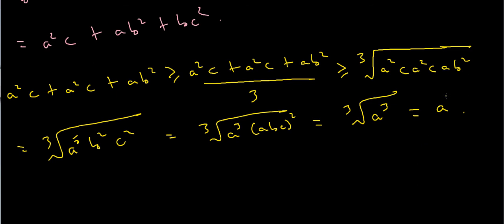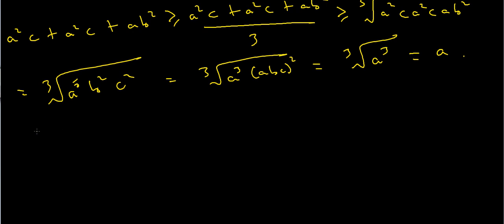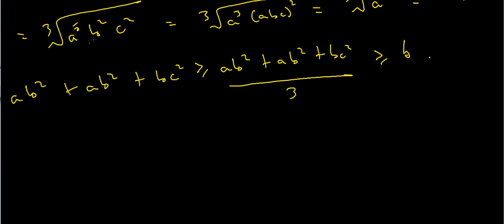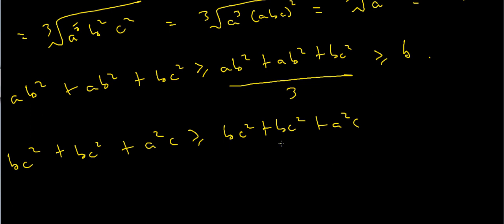Applying AMGM two more times to different sets of elements: for the set AB squared, AB squared, and BC squared, the arithmetic mean of these three things is greater than or equal to BC squared plus BC squared plus A squared C divided by three, and by the AMGM inequality this works out to be greater than or equal to B. Applying AMGM one last time to BC squared, BC squared, and A squared C, the arithmetic mean is greater than or equal to the sum divided by three, which by the AMGM inequality is greater than or equal to C.